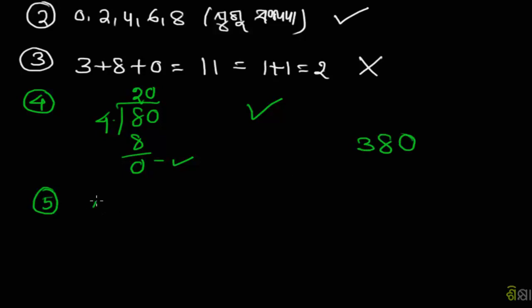For 5, if a number ends in 0 or 5, it's divisible by 5. So 380 is divisible.